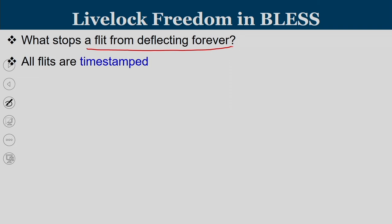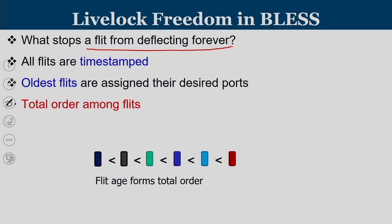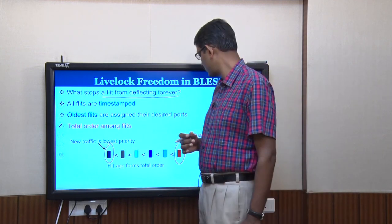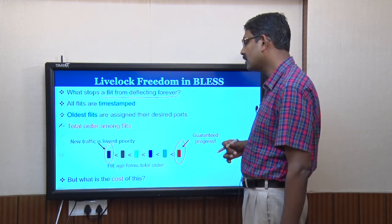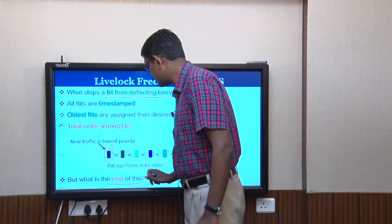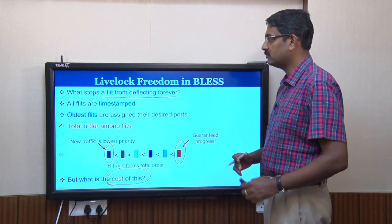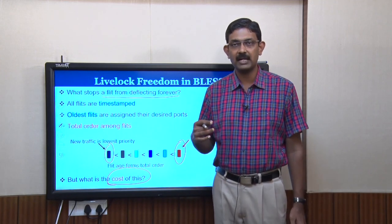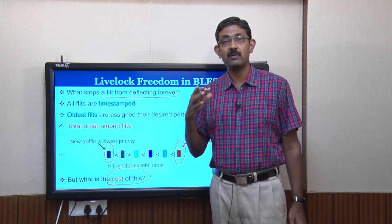To ensure live lock freedom, all flits must be time-stamped with a total ordering. Older flits are assigned to productive ports. The oldest flit in the system gets guaranteed progress. Newly injected flits have the lowest priority, but as time progresses, each newly created flit eventually becomes the oldest in the system, and from that point on it gets guaranteed progress.